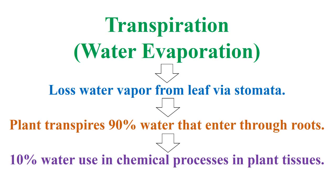Transpiration, or water evaporation, means lost water vapor from leaf via stomata. Plants transpire 90% of water that enters through roots, and about 10% of water is used in chemical processes in plant tissues.